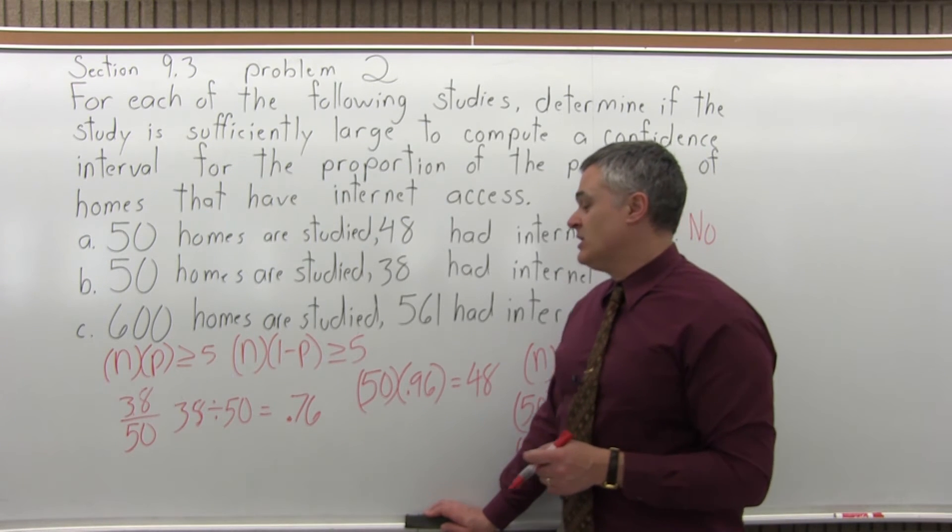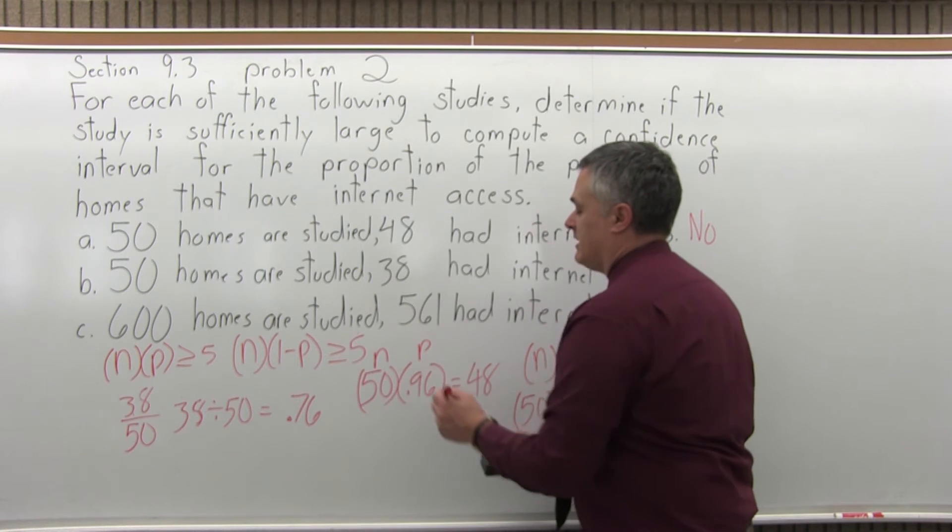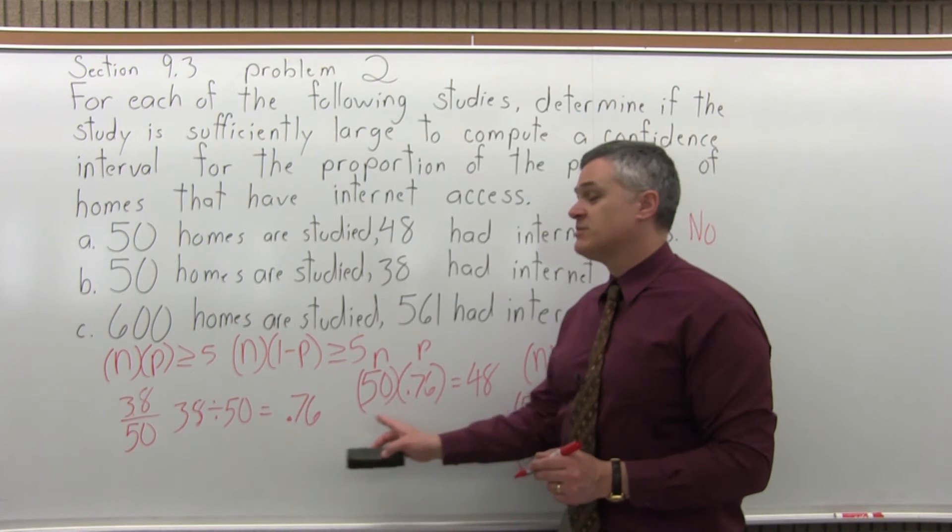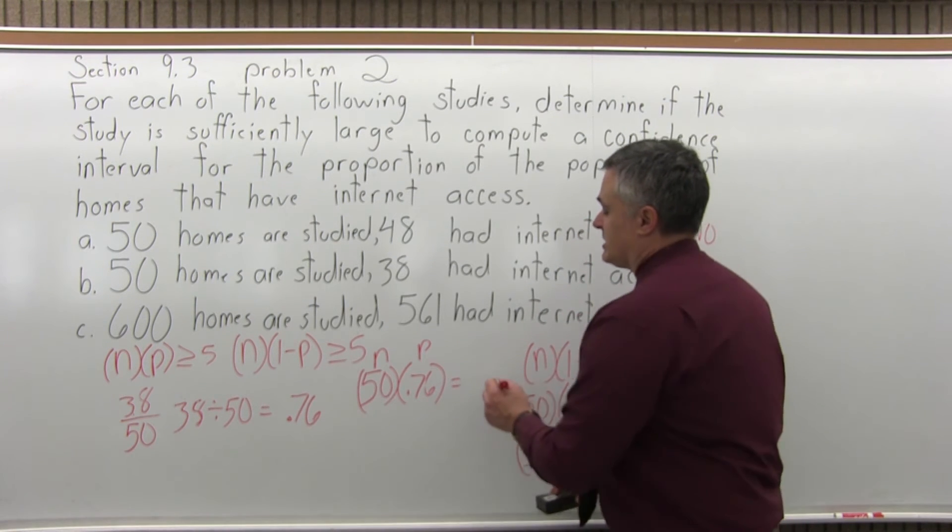So, n times p, which we did before, n times p, instead of times .96 the way we did for part a, it's 50 times .76 for b. Which does come out to 38.